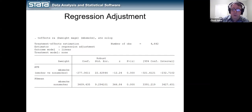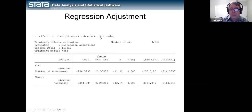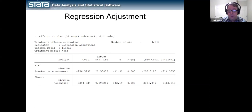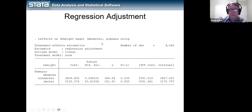Using the ATET option estimates the average treatment effect only among mothers who did actually smoke. That number is a little bit different. We could also use the 'pomeans' option, which simply displays the potential outcome means in the two groups — the average expected birth weight for mothers who did smoke and who did not smoke. To this day I don't know why we can't just report all of those numbers in the same output, but that's the way it works.